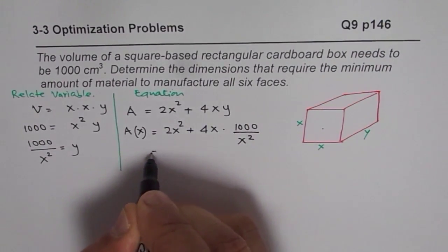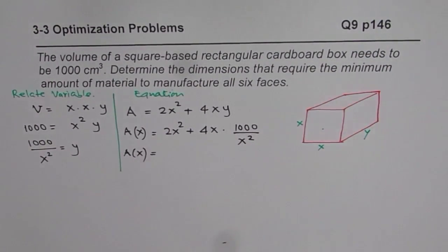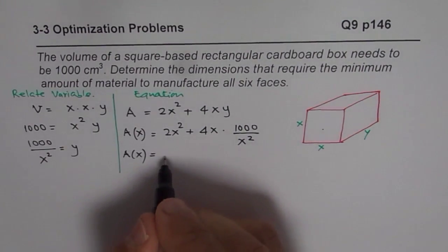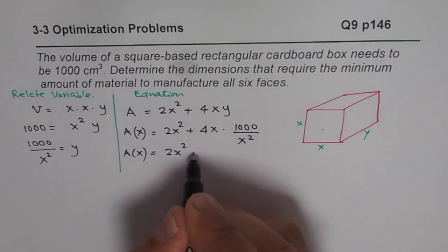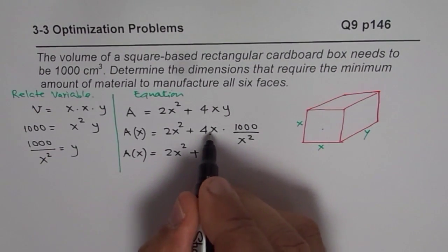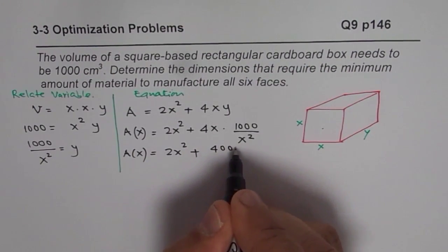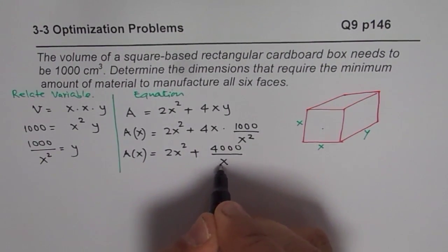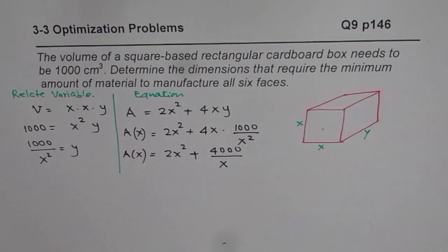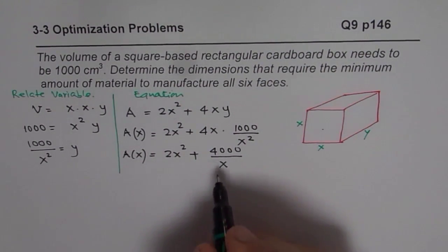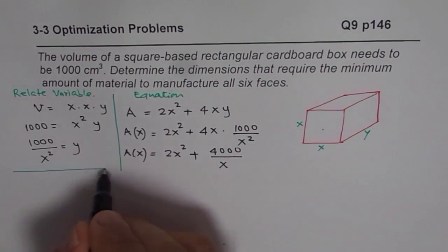So we will say area in terms of x will be equals to 2x² plus 4x and y is 1000 divided by x². So that could be written as function of area in terms of x. So we have 2x² plus 4000 over x. That is the relation which represents area in terms of one variable.